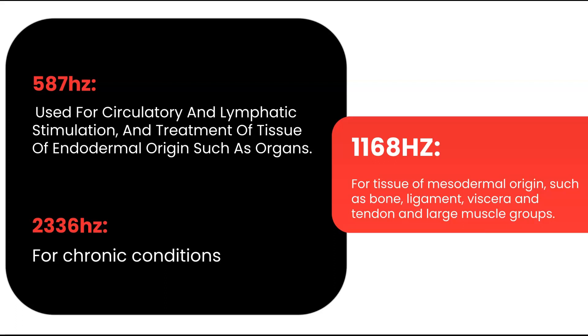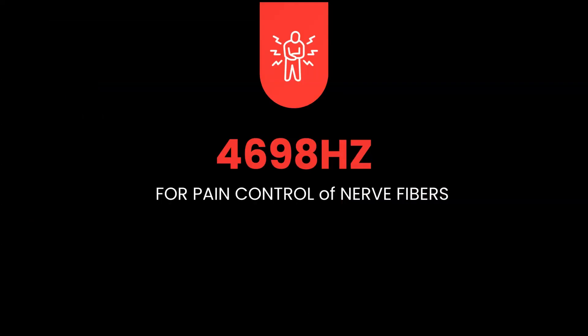2336 hertz is for chronic issues, and 4,698 hertz is for pain control of nerve fibers — this frequency helps to calm nerves by blocking the pain signal. Many of these frequencies have a lot of crossover; for example, 73 hertz could be used for chronic issues, as could 2,336 hertz. There's no bad pulse option, just some have shown to work better than others, and as every body is different, response may also be different.